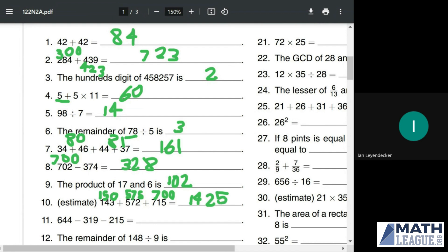644 minus 319 minus 215. First of all, we can add the 319 and the 215 and then subtract them both from 644 to be a little bit easier. If we think about 319 as 320, then that would make the sum 535. So the sum of this is going to be 534. And then 644 minus 534 is going to be 110.